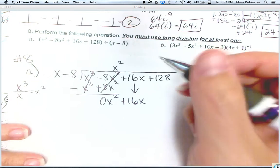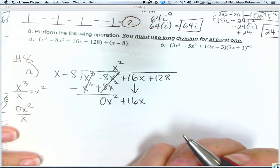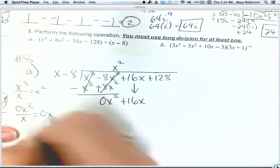Next, we take 0x squared and divide by x. Well, that gives us 0x.